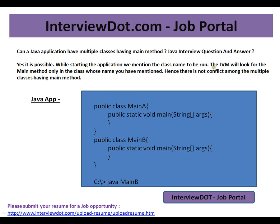While starting the application, we mention the class name to be run. The Java Virtual Machine, the JVM, will look for the main method only in the class whose name you have mentioned. Hence, there is no conflict among the multiple classes having the main method.